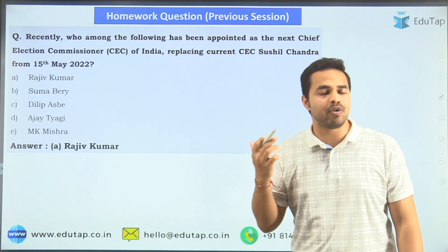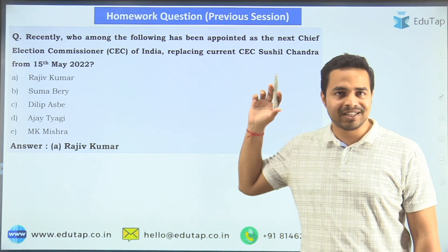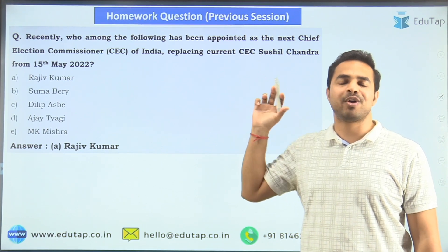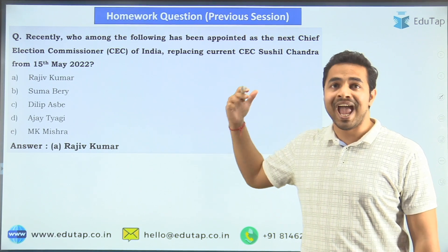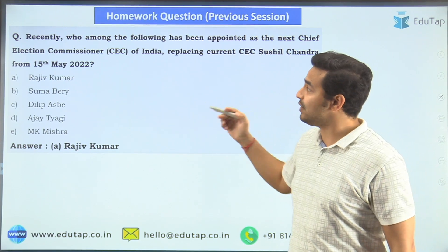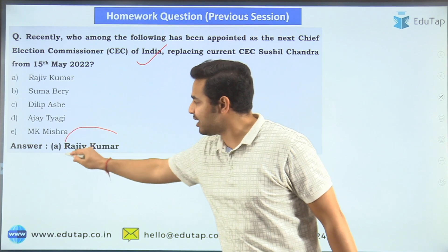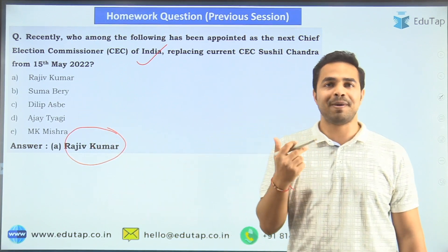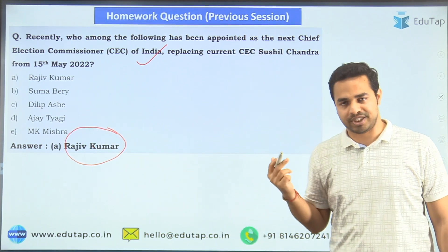Now let's move on to the homework question from the previous session. In the previous session, the question was: who among the following has recently been appointed as the next Chief Election Commissioner of India? And the answer is Rajiv Kumar, who has replaced Sushil Chandra.